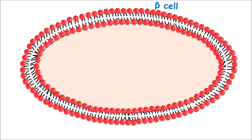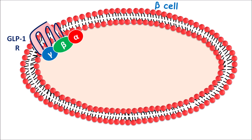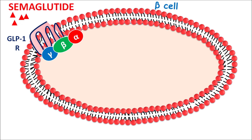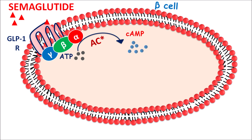On beta cells, GLP-1 receptors are expressed, which are G protein-coupled receptors coupled with alpha, beta, and gamma subunits. Semaglutide acts on this GLP-1 receptor, causing activation and stimulation of the adenylyl cyclase system. Activation of this enzyme converts ATP into cyclic AMP. This cyclic AMP plays an important role within beta cells by stimulating protein kinase A.